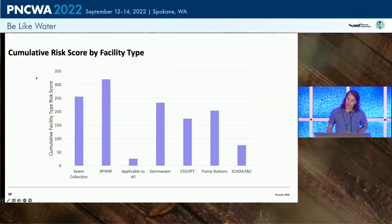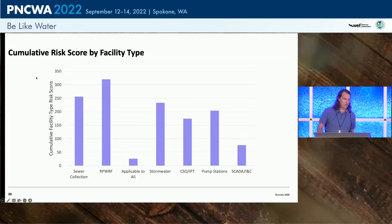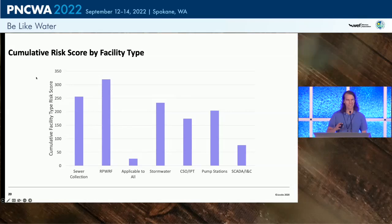The treatment plant came up with the highest overall risk profile, not far behind were sewer collection, stormwater, and pump stations. There were a couple of risks that cut across all categories and were difficult to assign, so we put them into their own category.